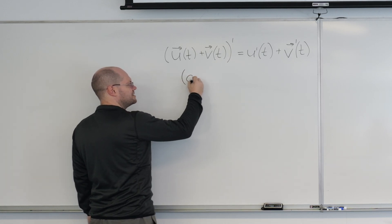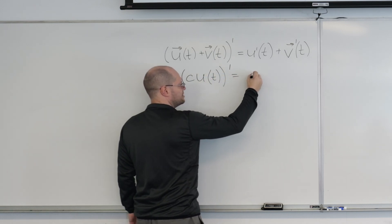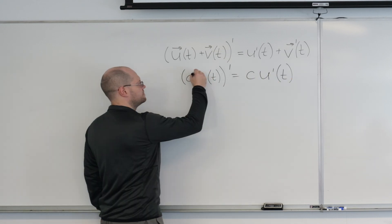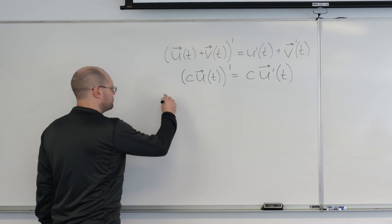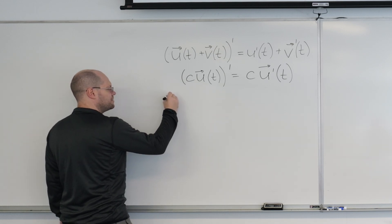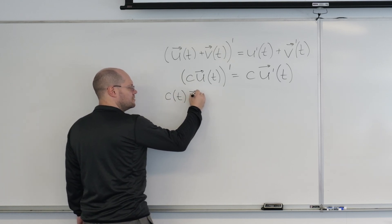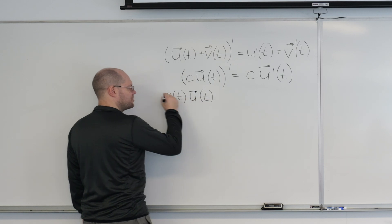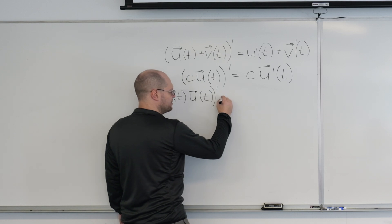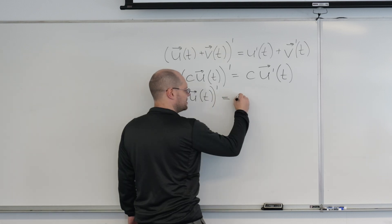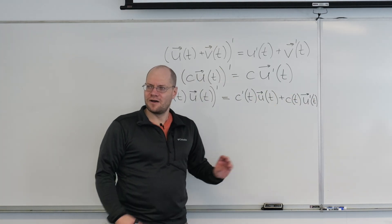So another one is if a function is multiplied by a constant, then you know exactly what it is. So then come the interesting ones. And one of them is the product rule. If you multiply by a scalar function that's also a function of t and you differentiate the product, then the derivative is exactly what you would expect.